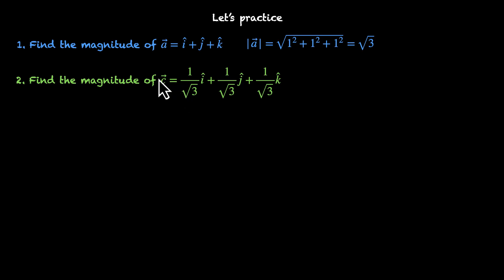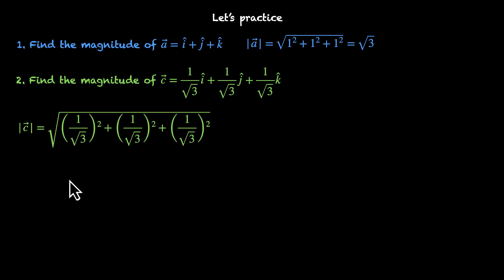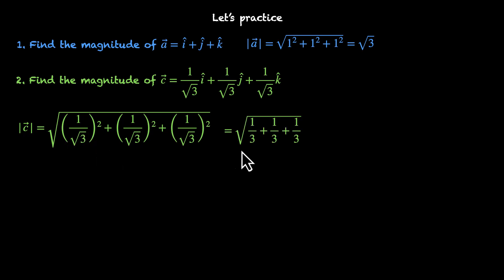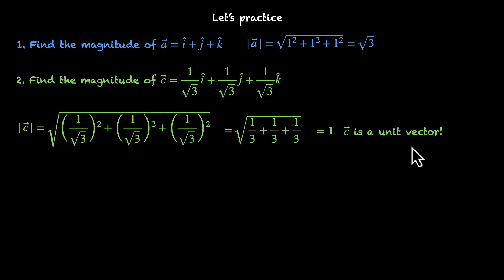Now find the magnitude of vector C = (1/√3) i-cap + (1/√3) j-cap + (1/√3) k-cap. The magnitude is the square root of the sum of squares of each component. Squaring 1/√3 gives 1/3, so we get √(1/3 + 1/3 + 1/3) = √1 = 1. Therefore, vector C is a unit vector.